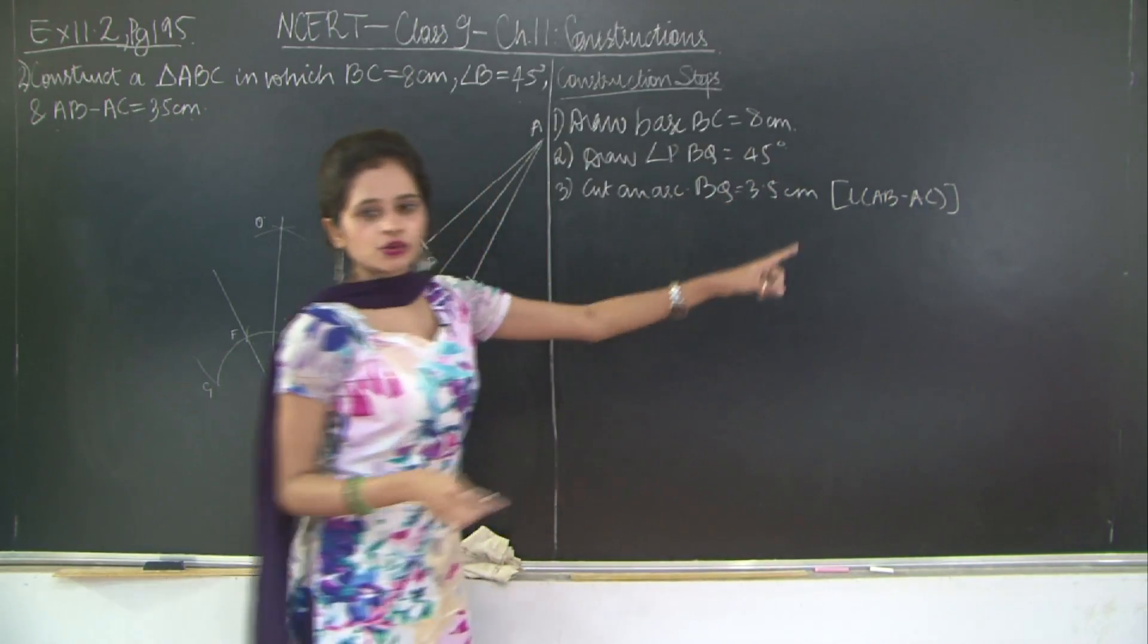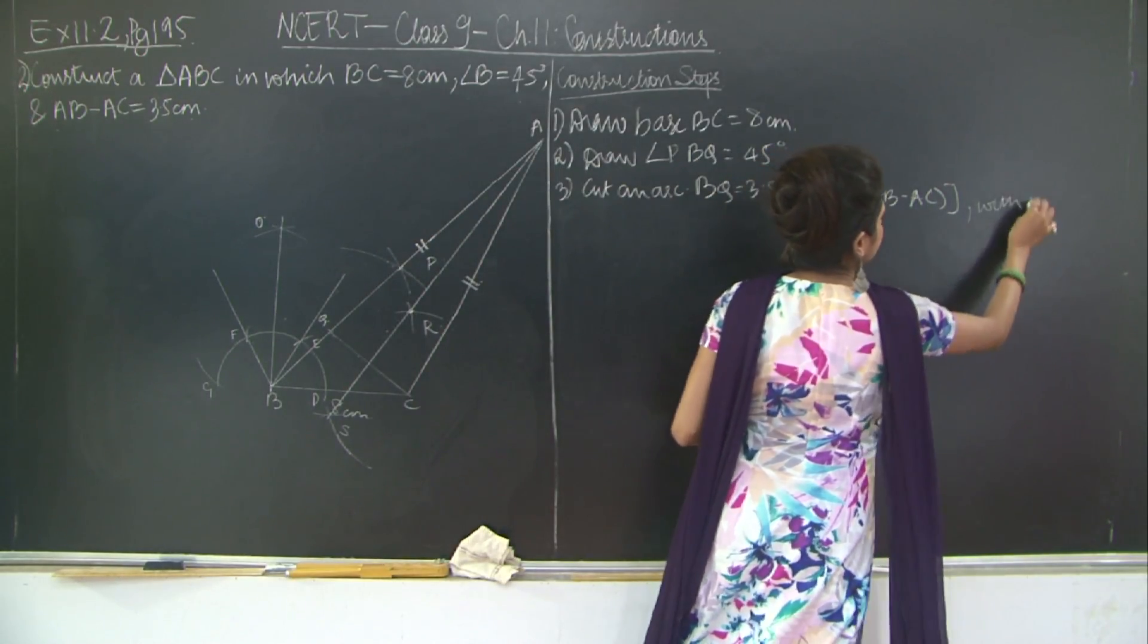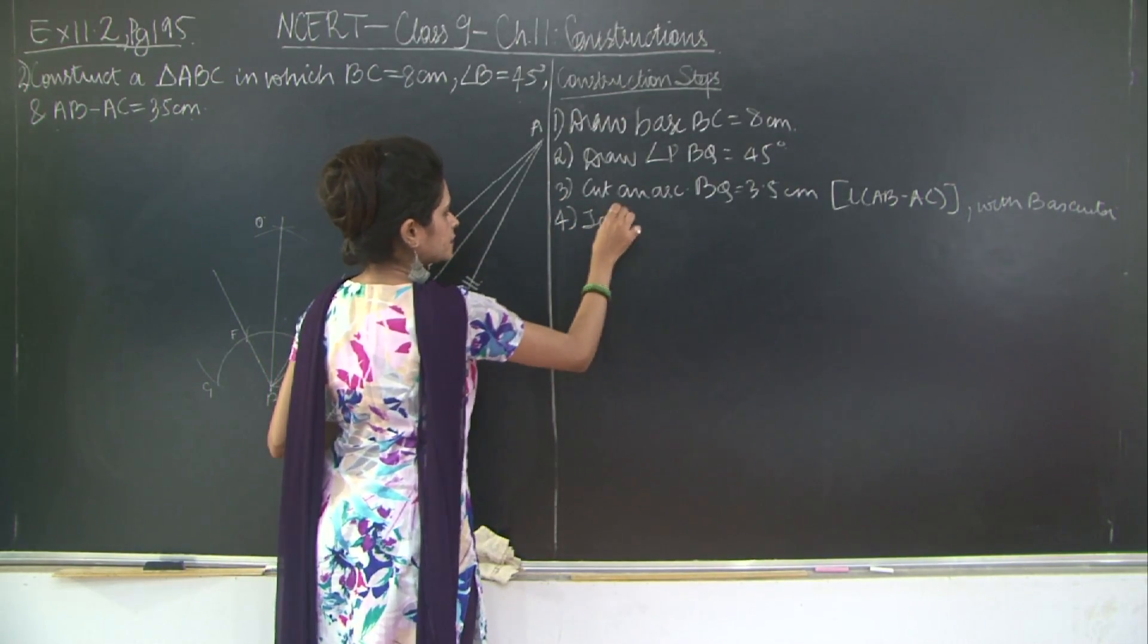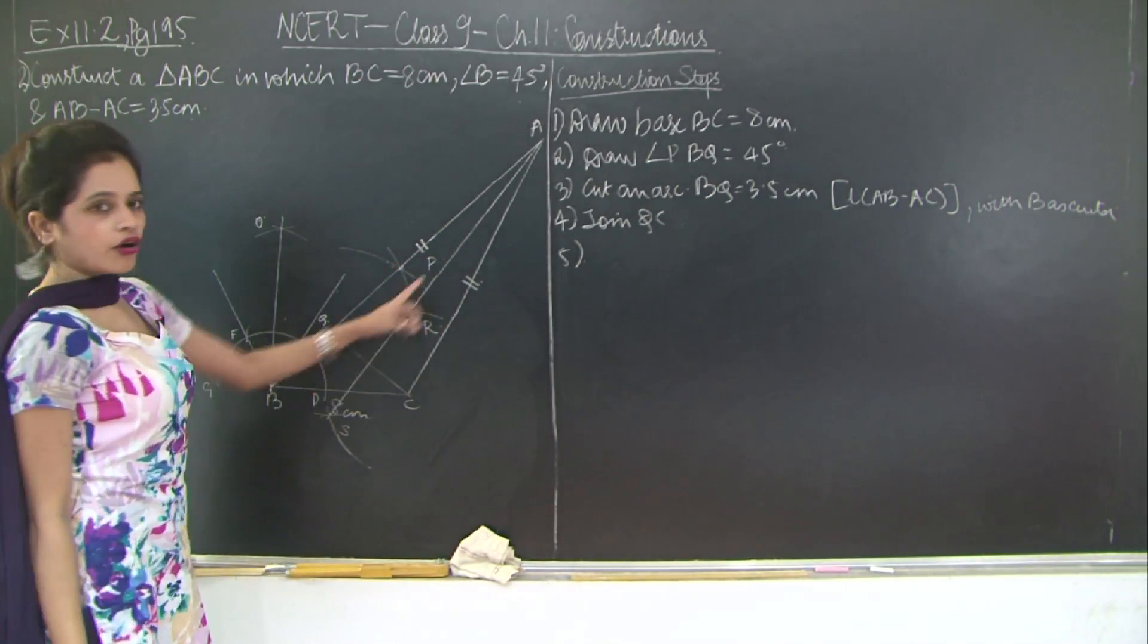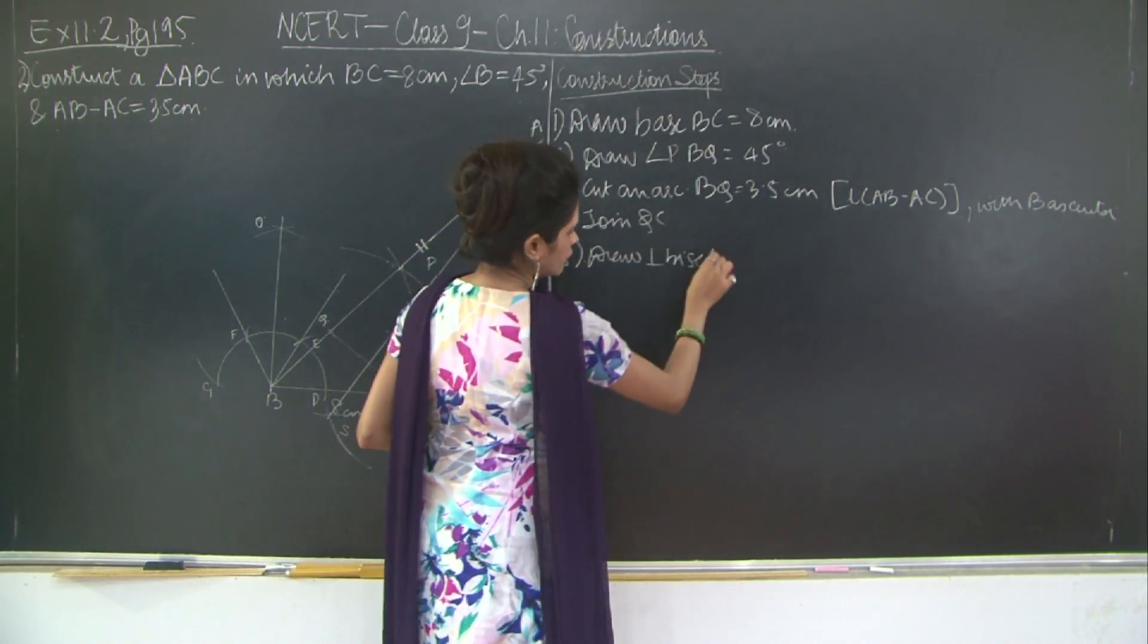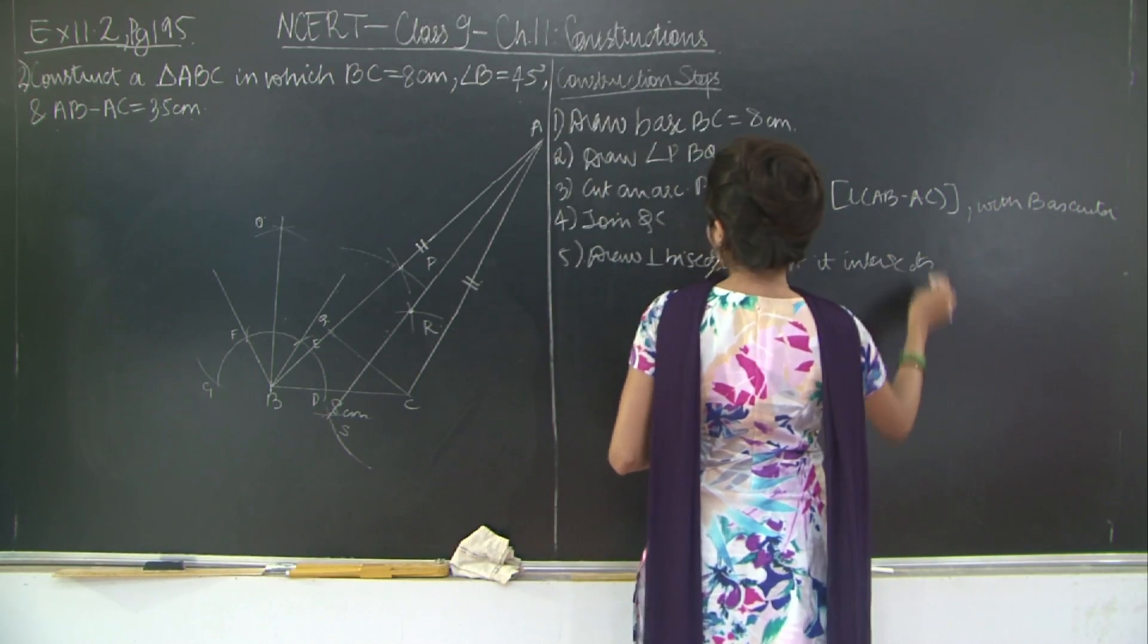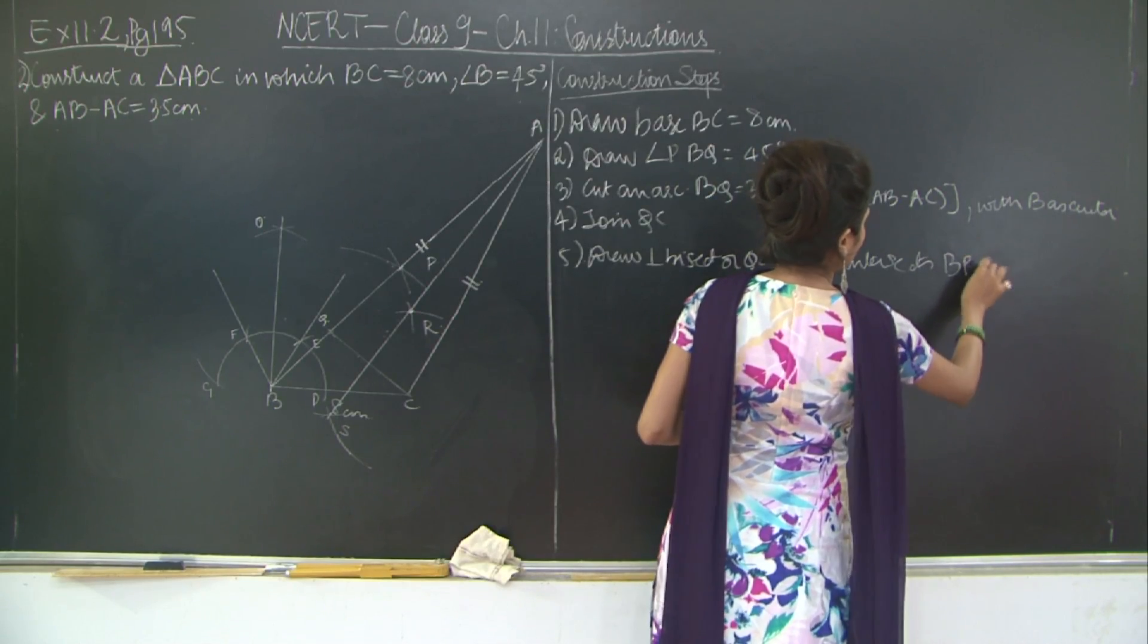So cut an arc BQ is equal to 3.5 cm with B as center. And then draw perpendicular bisector. Then what you did was join QC, then draw perpendicular bisector of QC such that it intersects BP at point A.